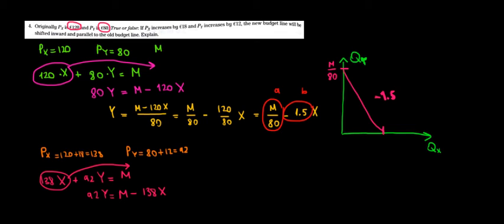Now let's divide both sides by 92 so we can have Y on one side only. Y equals M minus 138X divided by 92. And that's equal to, again,